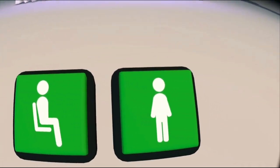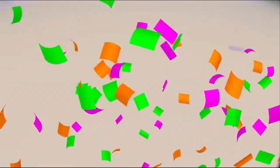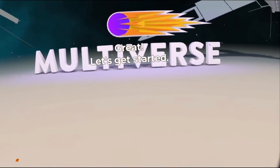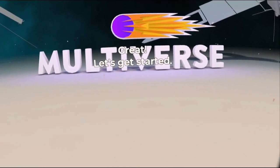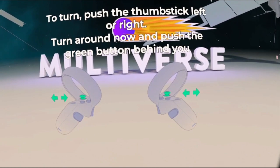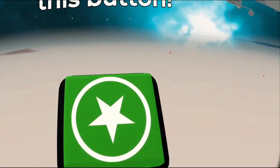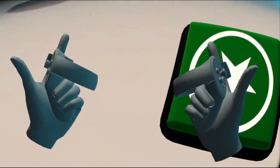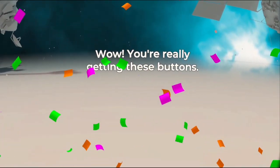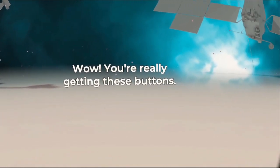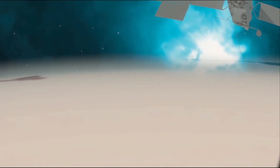Are you standing up, or sitting down? Standing up. Great. Let's get started. To turn, push the thumbstick left or right. Turn around now and push the green button behind you. Oh, snap turning. Oh, now we got hands. Wow, you're really getting these buttons. And how.